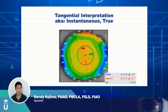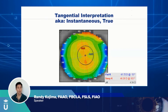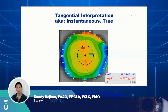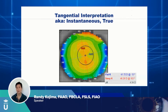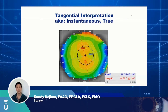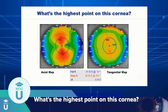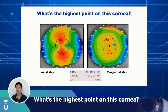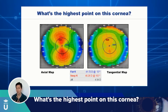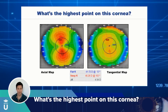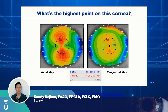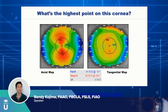Where does the cornea curve? Where does it curve most radically? Where does it have the least curvature change? The tangential map is very sensitive to any kind of change in power. One of the things I think we all get wrong when we're relatively new to topography — and I know I was very guilty of this — is really struggling to figure out what all the data the instrument has given you actually means.